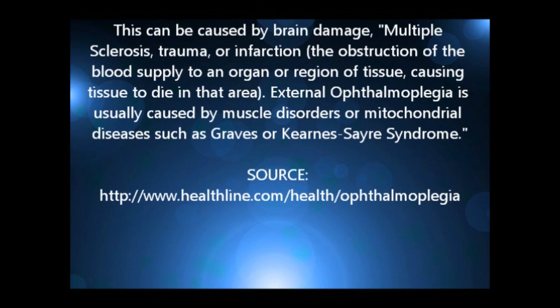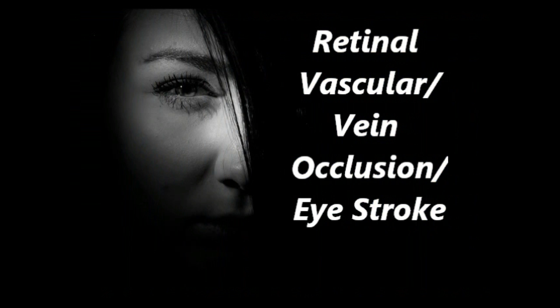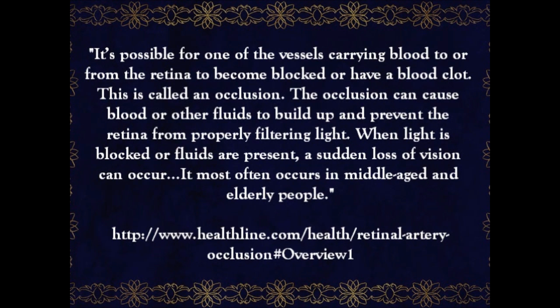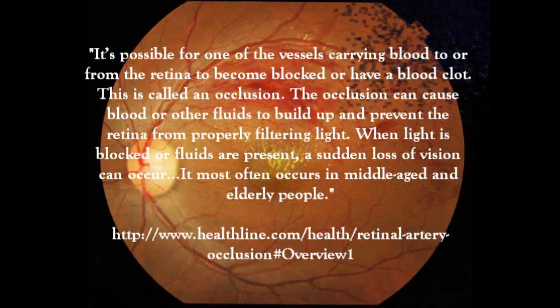Next is retinal vein occlusion, also known as eye stroke. This can happen because of blood clotting in the retina or when a vein vessel in the retina becomes blocked. When this happens, blood or other fluids build up and prevent the retina from properly filtering light. When light is blocked or fluids are present, a sudden loss of vision can occur. When blood clots or is blocked, it can cause a stroke — this is why it is also called eye stroke.